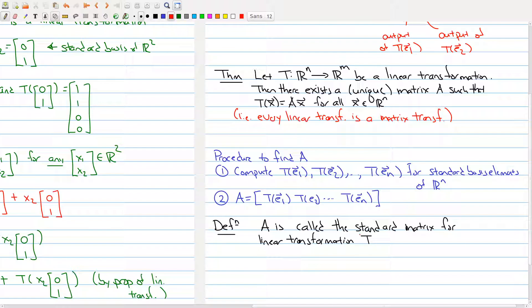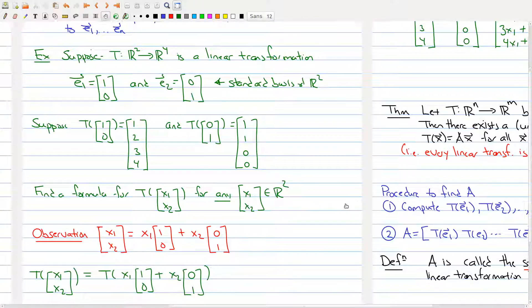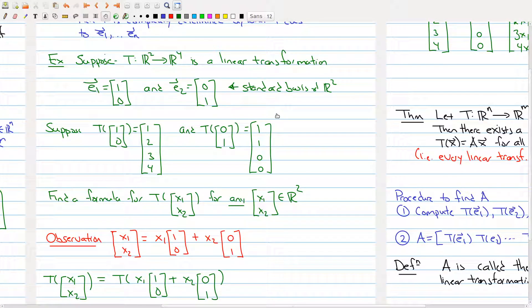So let's underline standard matrix here, because that's the new word. So the A in this theorem, it exists, and it's called the standard matrix for the linear transformation. So going back up here, this matrix here is going to be the standard matrix for this linear transformation.